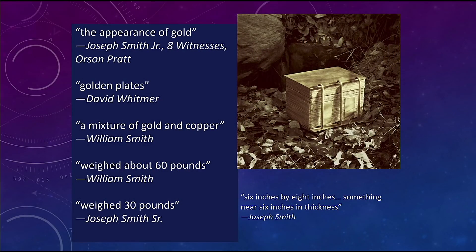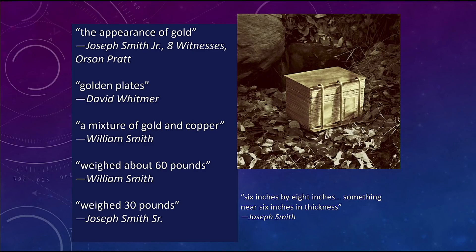Orson Pratt and Joseph Smith himself said the plates had the appearance of gold. David Whitmer said 'golden plates' — it's kind of an adjective rather than necessarily a literal material. William Smith said it was a mixture of gold and copper, and Josiah Stoll claimed he saw the corner and it was greenish in hue, meaning some copper had gotten in there. William Smith said the plates weighed about 60 pounds, while Joseph's father weighed the ones he saw on a scale and said 30 pounds. Joseph said they were 6 by 8 inches, roughly the size of the plates on the table here.